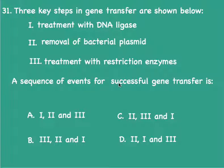Three key steps in gene transfer are shown below. Putting them in the right sequence, we would first have to remove the bacterial plasmid, treat both the plasmid and the host DNA with restriction enzymes to create sticky ends, and then ligate those pieces together and introduce them into the host cell. So that sequence would be 2 followed by 3 followed by 1. Answer C.